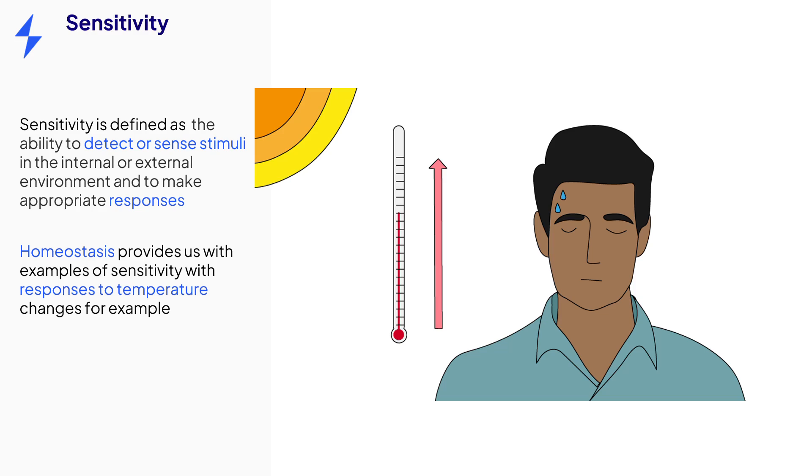Other stimuli include pH, light, humidity, oxygen and carbon dioxide concentrations. And of course plants are sensitive to stimuli too. Don't get confused with the word sensitivity in the context of biology. We are not talking about emotional sensitivity here.